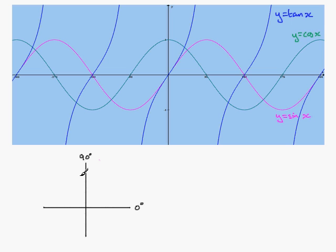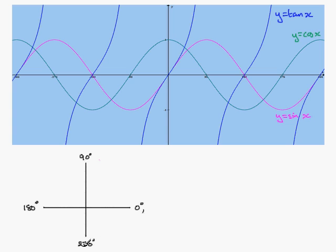This area is called the second quadrant, which goes from 90 degrees to 180 degrees. Then we have the third quadrant going from 180 degrees to 270 degrees. And finally, the fourth quadrant which goes from 270 degrees to 360 degrees.